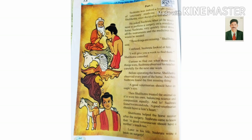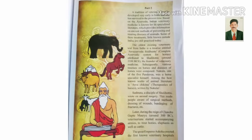Now here the second part is on page number 65. You can see the pictures of animals. A tradition of veterinary therapy — that is, treatment of disease — developed very early in India and has survived to the present time. Based on Ayurveda, Indian veterinary medicine is known for its specialized literature, which provides information on ancient methods of preventing and treating diseases of animals. Some of these treatments, little known outside India, are still practiced today.